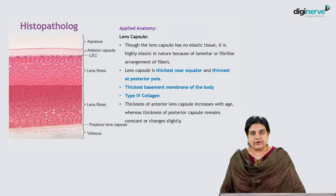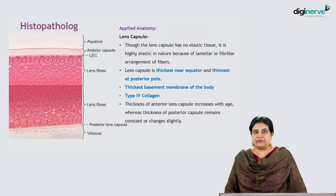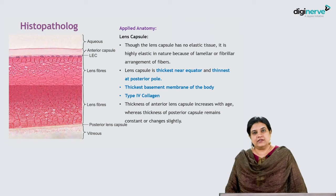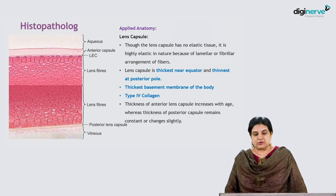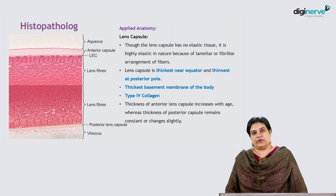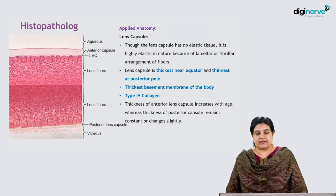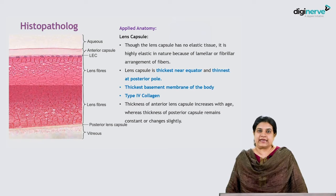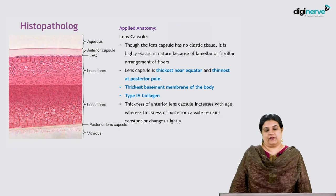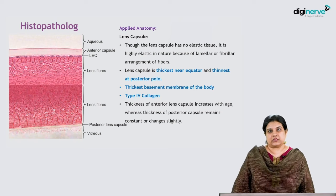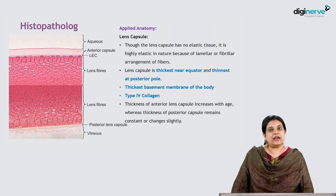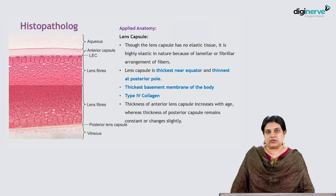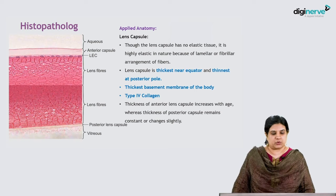It's considered the thickest basement membrane of the body and is composed of type 4 collagen. The thickness of the anterior lens capsule increases with age, whereas the posterior capsule thickness either remains constant or may change slightly. The thickest membrane and type 4 collagen composition can come as MCQ questions.